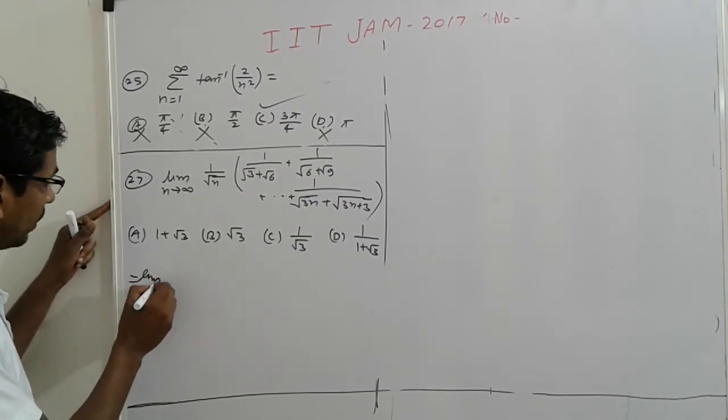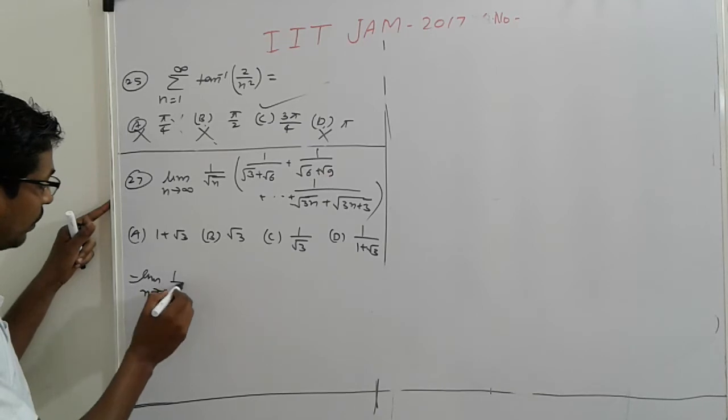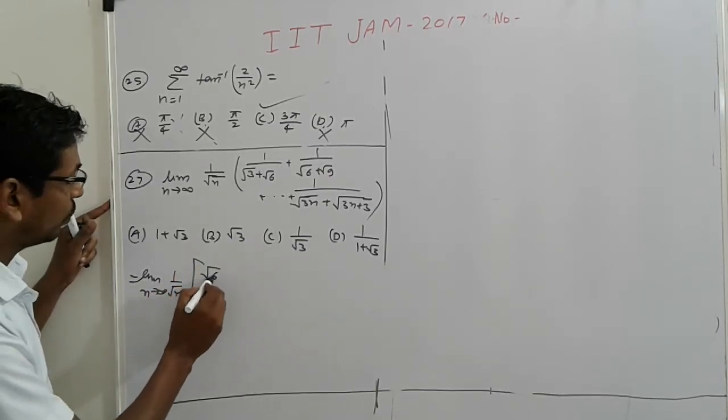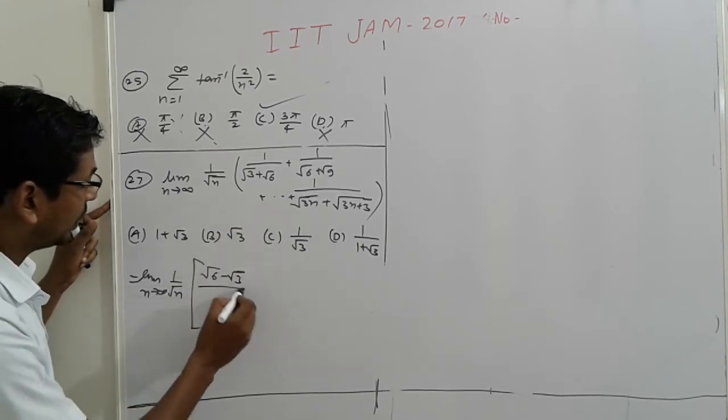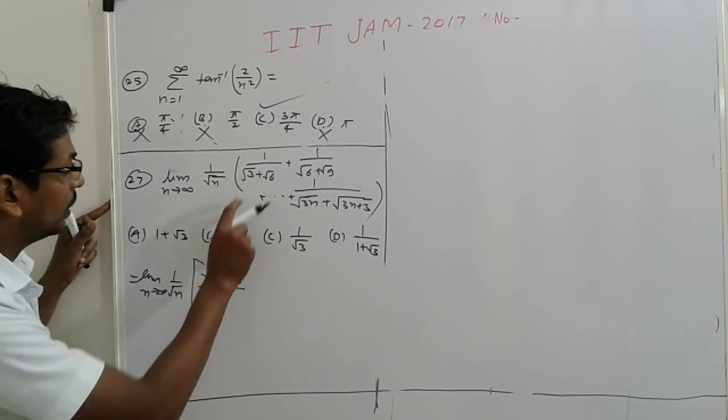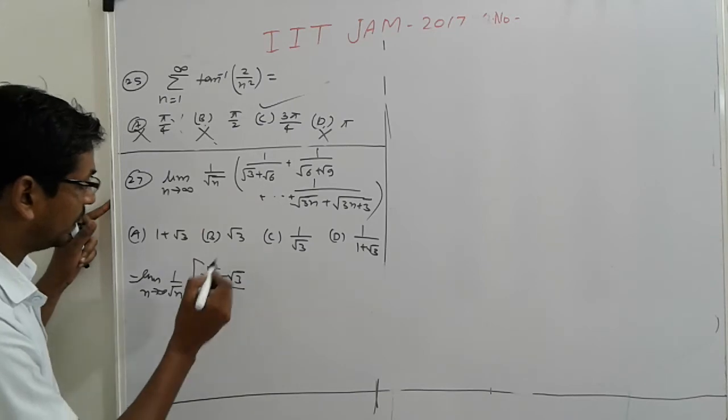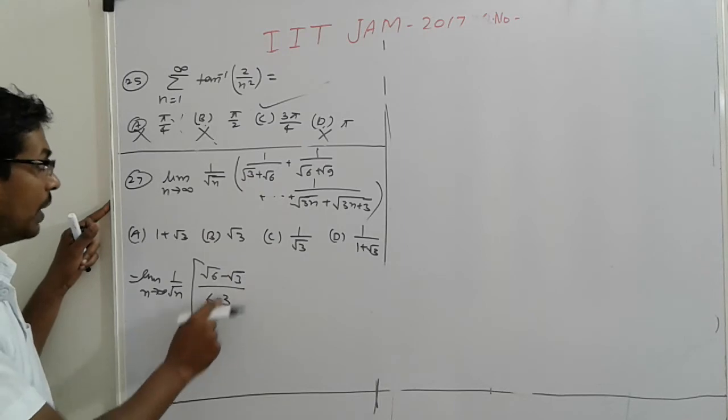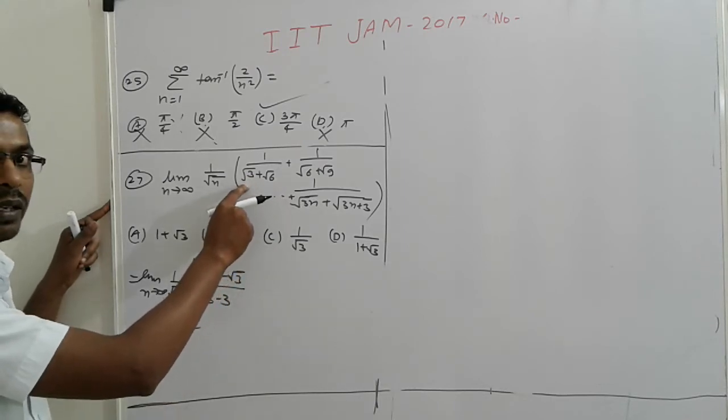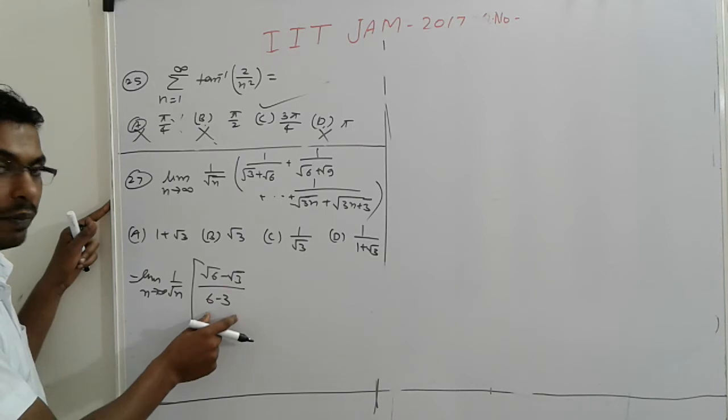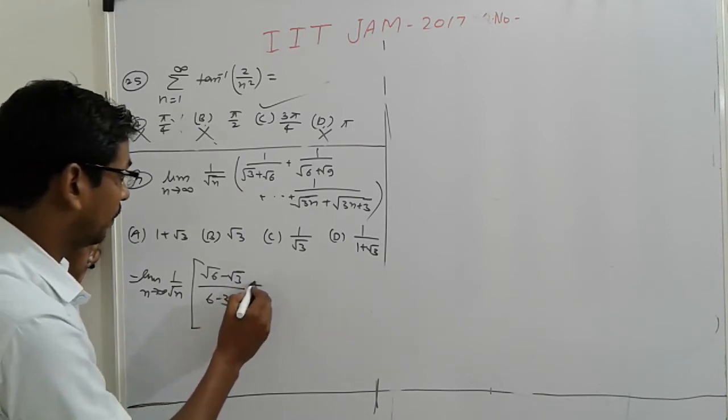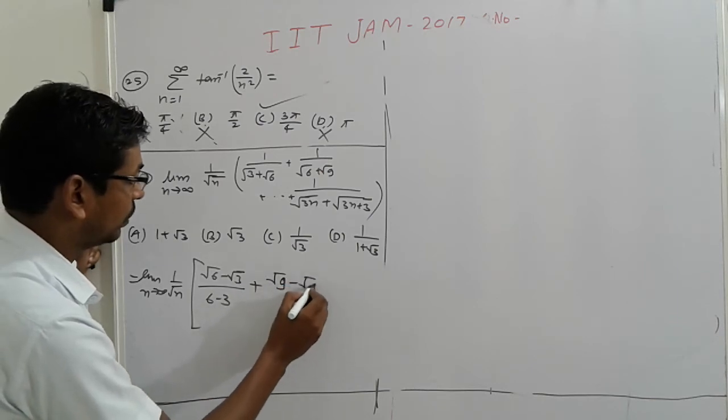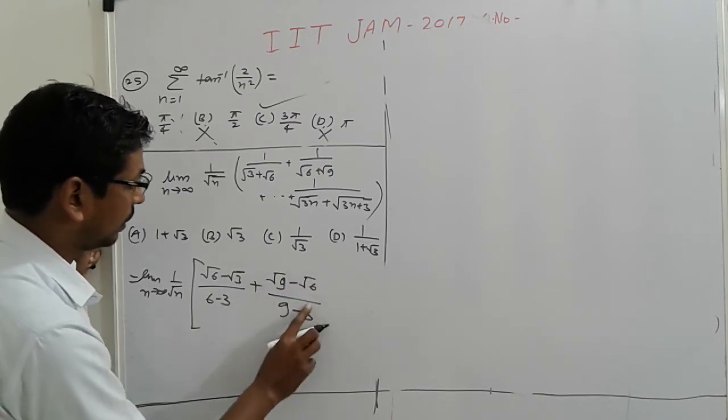Simple. The limit as n tending to infinity: 1 upon root... If we multiply by conjugate root 6 minus root 3, the denominator is root 6, 6 minus 3. Simple, multiplying by conjugate root 6 minus root 3. Here root 6, a square minus b square, a plus b over a minus b. Break it and solve. Plus here root 9 minus root 6 upon 9 minus 6.